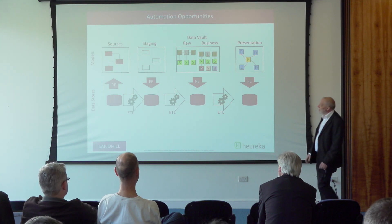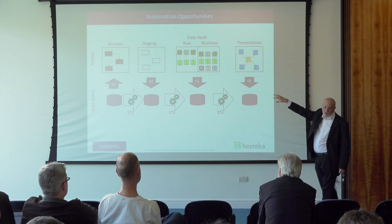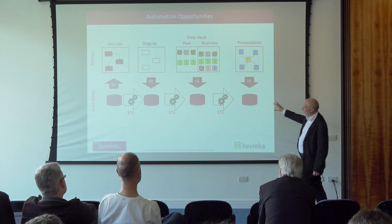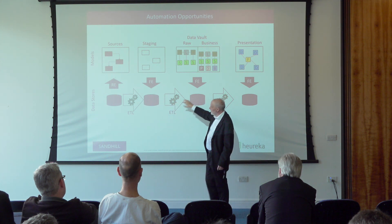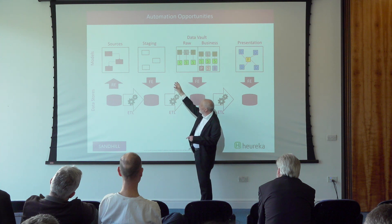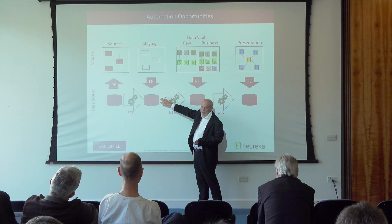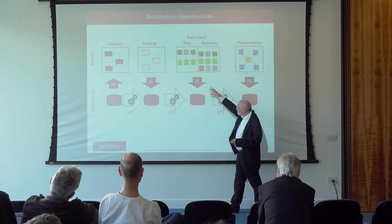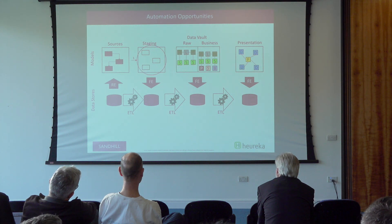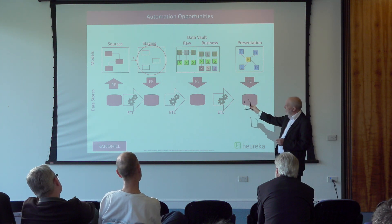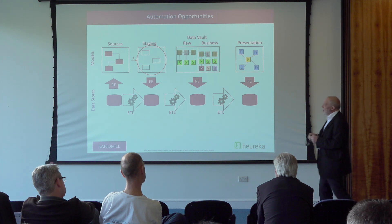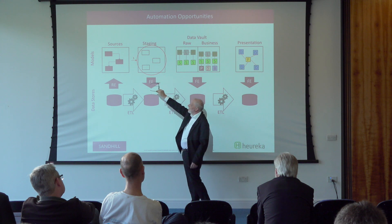These are the opportunities for automation. Along the top line we have the set of models that we would normally build using a data modeler in this context, and how we would use those in combination with the data stores within the warehouse. The source model we would normally generate from reverse engineering. We then construct the staging model from the source model and forward engineer our staging area, then construct the models for the data vault and forward engineer that. Because it's a fully predictable, fully defined methodology, we know what the structure of the staging area is going to be based on the source area, so we can generate that automatically.